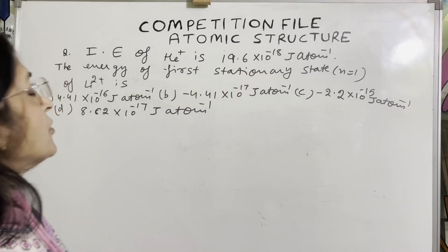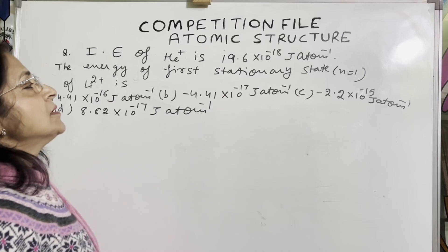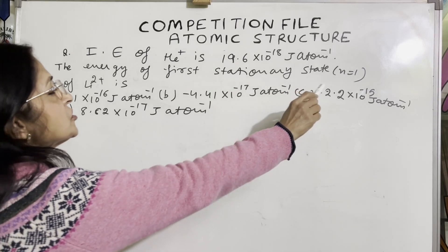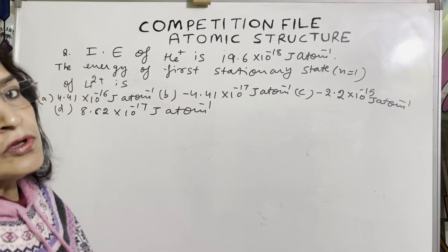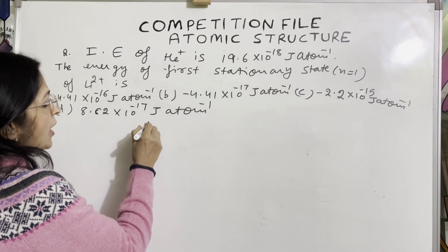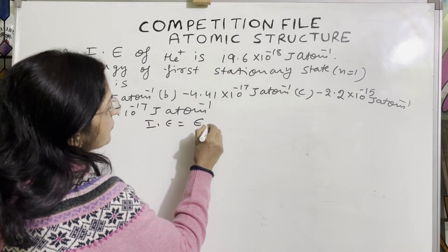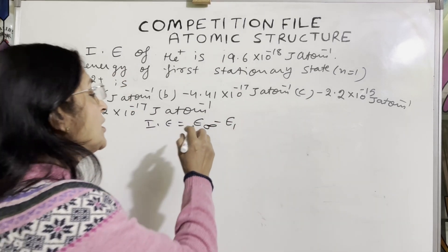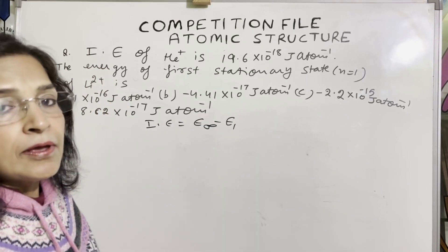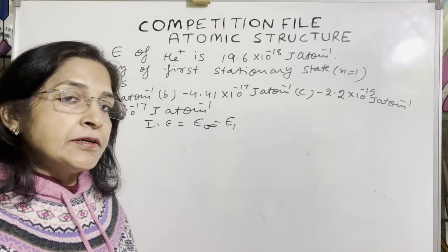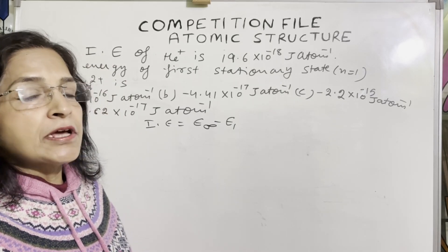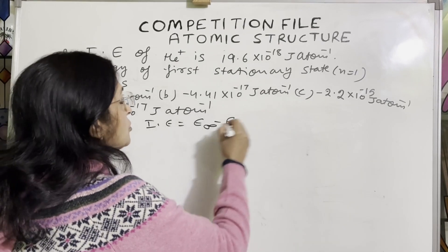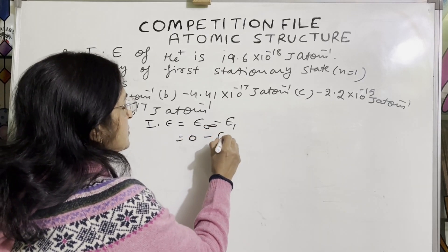Next question: The ionization energy of helium plus is 19.6 × 10⁻¹⁸ joules per atom. We need to calculate the energy of the first stationary state (n=1) of lithium. We know ionization energy = E∞ − E₁. For ionization, the excited state is taken at infinity, meaning the electron completely leaves the shell. At infinity, energy of the electron is taken as 0.